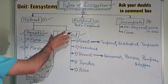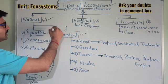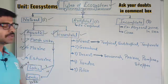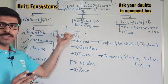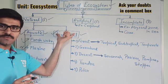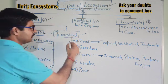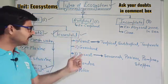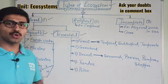The second part of the natural ecosystem is the terrestrial ecosystem — ecosystems present on the land surface. It can be further classified into five different categories.